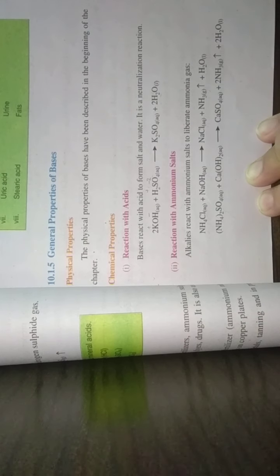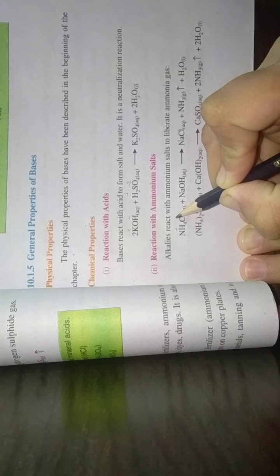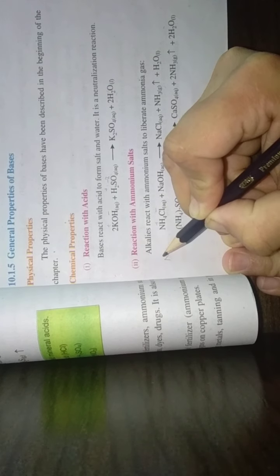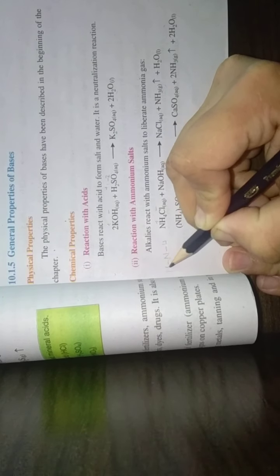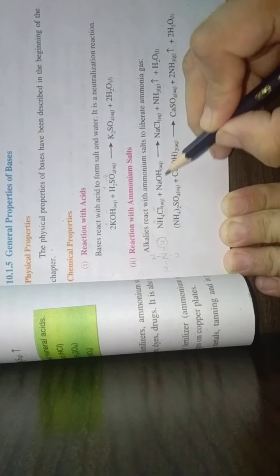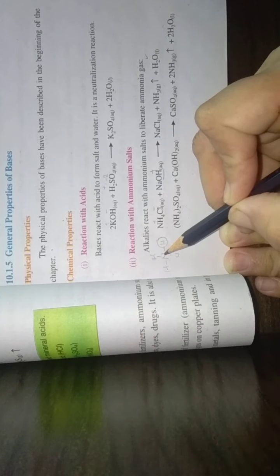Reaction with ammonium salt. Alkalis react with ammonium salts to liberate ammonia gas. Ammonium chloride plus sodium hydroxide: NH4 has plus charge, chloride has negative charge.